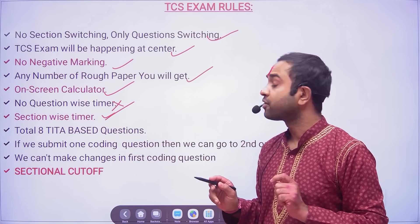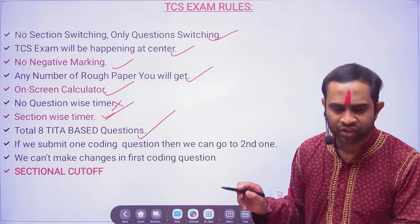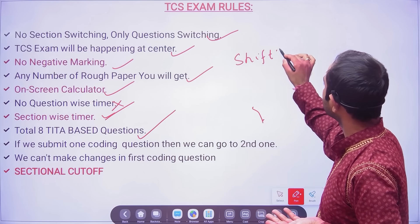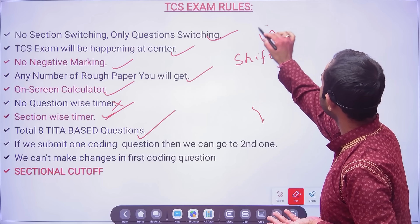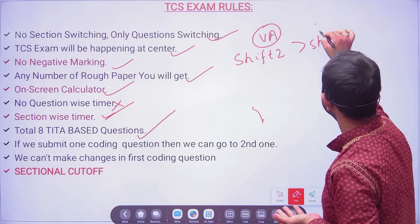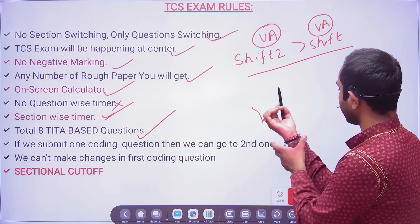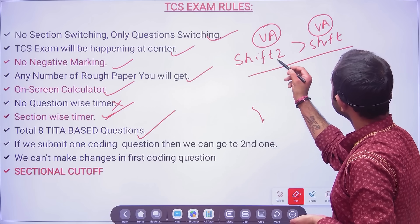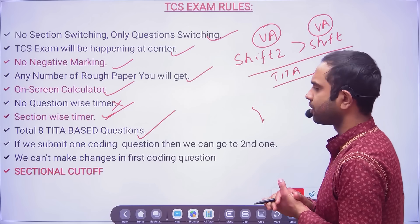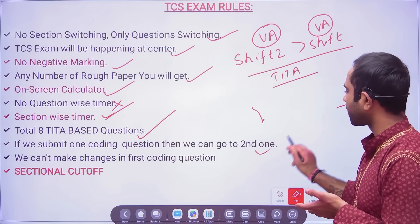Aptitude has 20 questions and 25 minutes. Theta-based questions were more this time in shift 2. Verbal ability was tougher in shift 2 than shift 1. In shift 2, there were theta-based questions in verbal abilities — that is one of the differences between shift 1 and shift 2.